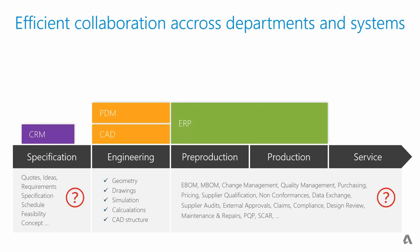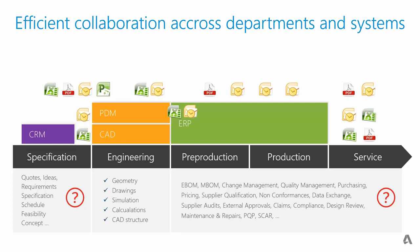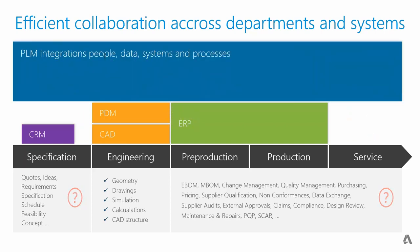There are processes that ERP, CRM, and PDM systems don't fully manage — things like requirement specifications, feasibility studies, and early product definition work. In later stages, things like quality management, non-conformance processes, and supplier audits aren't well covered either. Most companies fill these gaps with Excel, Outlook email, files on network drives, and similar workarounds. That's where PLM — Fusion Lifecycle — comes in. It manages these business processes from the very inception of a product to its end of life, with purpose-built capabilities in quality management, supplier management, and new product introduction.